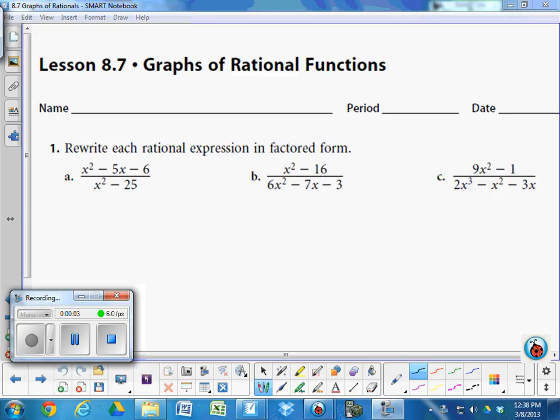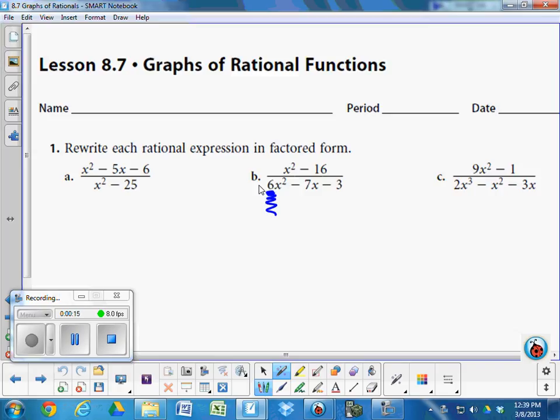When you're looking at something like 1b on the 8-7 worksheet and you're trying to factor the denominator, the key here is this lead coefficient, that 6, that kind of bothers everybody. When we were learning about factoring, the first thing that I suggested to you was if you can, take that 6 and factor it out, but you can only do that if 6 goes into 6, 7, and 3 nicely. Does it? No. You would have to factor a 6 away from 7, and that's not going to leave you with a nice thing to factor.